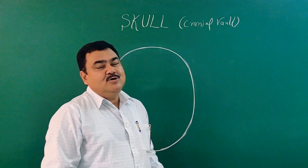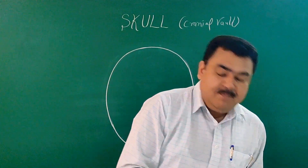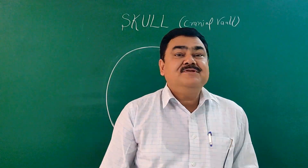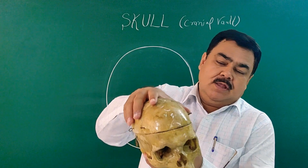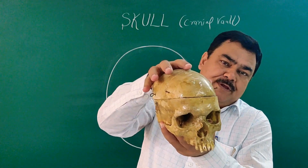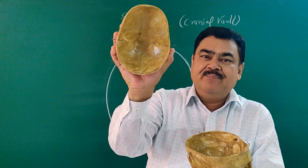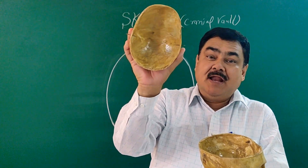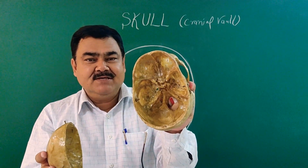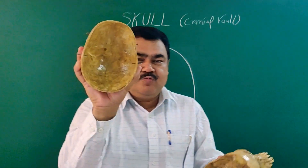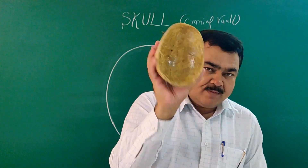Now we will discuss the interior of the skull. In previous lectures you have seen the exterior of the skull. Now the roof is removed — this part is the cranial vault or roof of the skull, and this part is the base of the skull. We will discuss them one by one, starting with the roof of the skull.